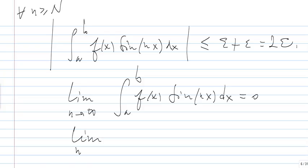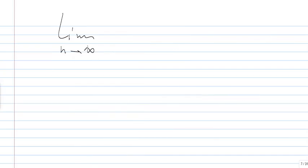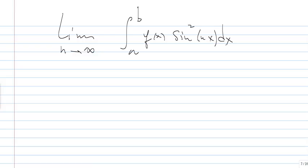Likewise, the limit of the integral from a to b of f(x)cos(nx) dx is equal to zero. This is the famous Riemann-Lebesgue Lemma. The second part of the problem asks us to find limits when n goes to infinity — how we can use these previous results to find the limit of the integral of f(x) times sine squared of nx. It's just a simple application of this wonderful Riemann-Lebesgue Lemma that we have just proven.